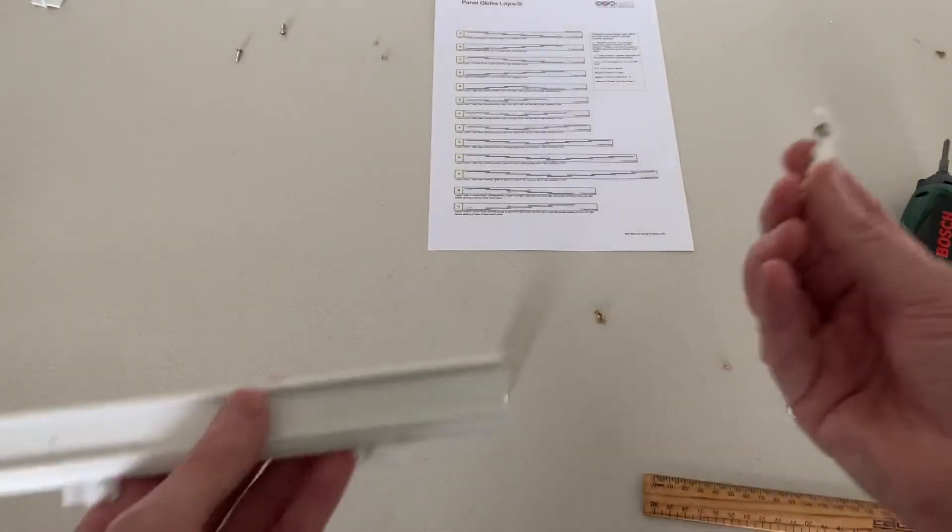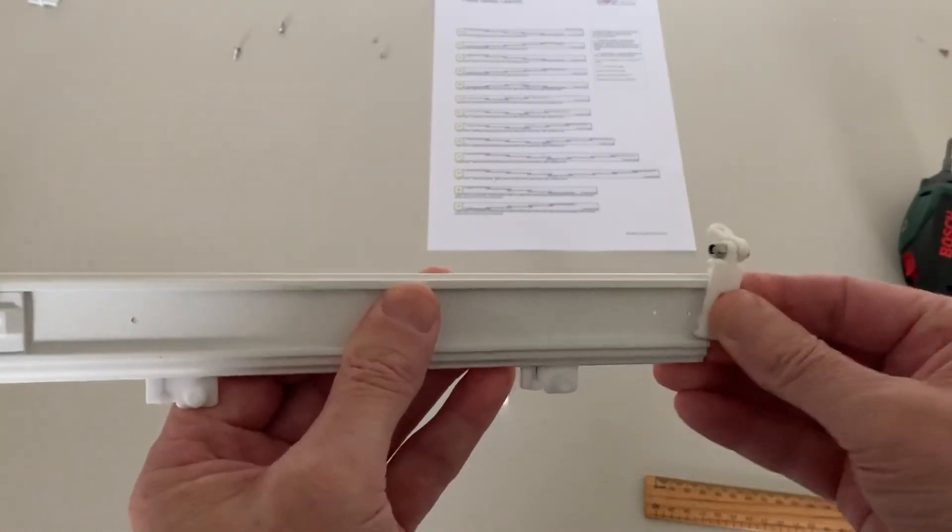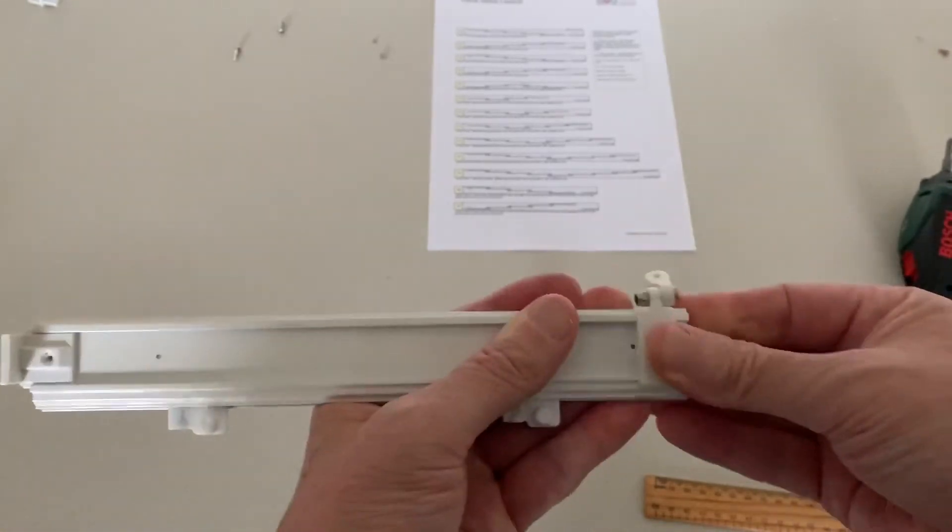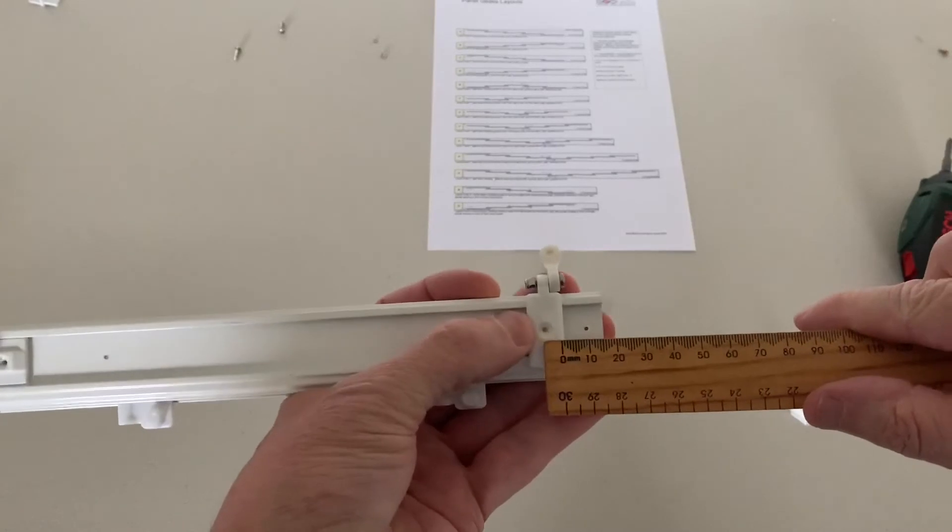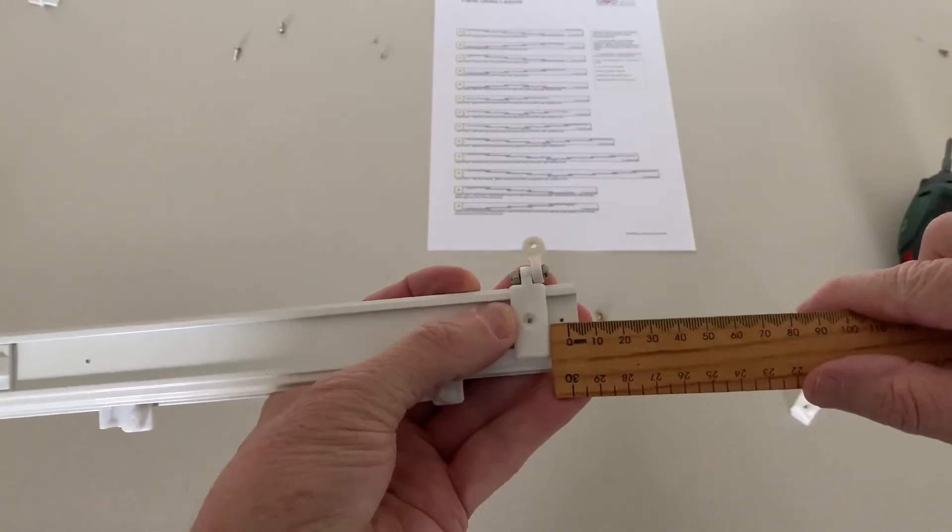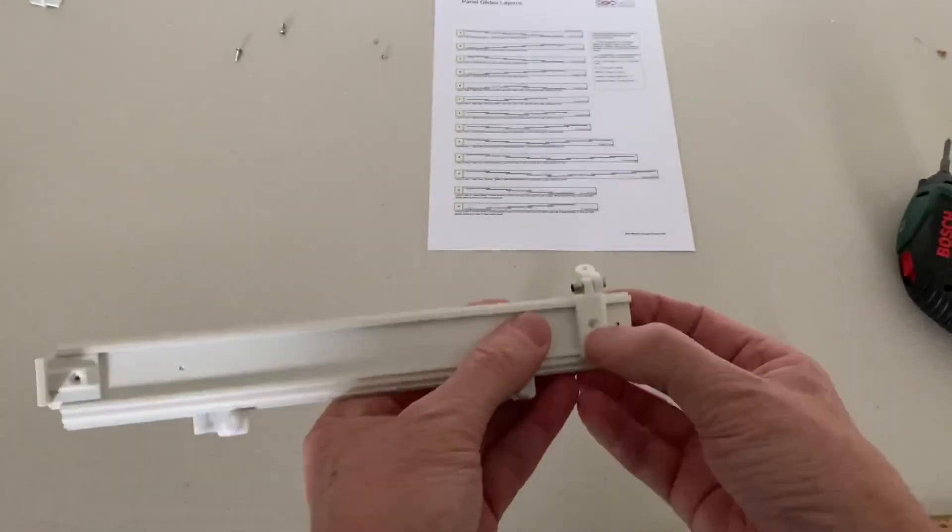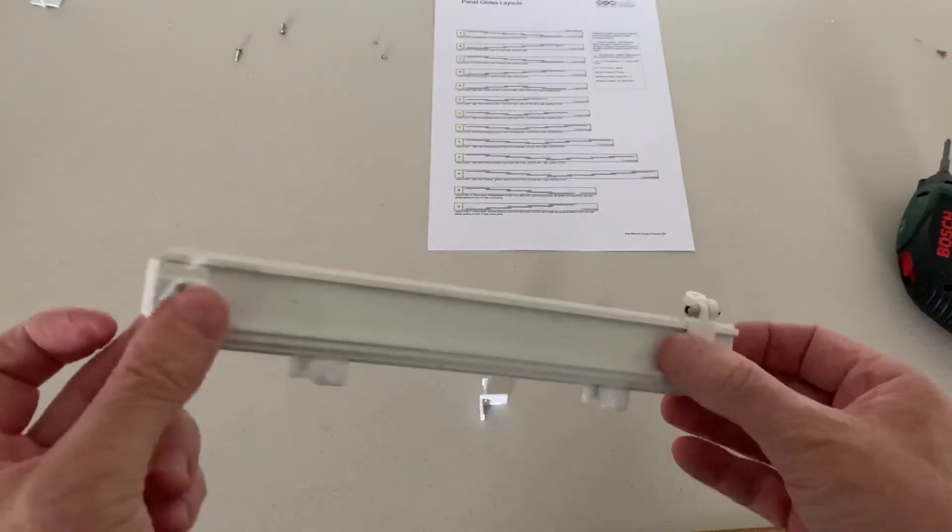If you're putting the one control on again, it just slides on the extrusion like so. And that's about 15 mil over from the end, roughly about 15 mil. Also a screw goes in there. So that's the different ways you set up a carrier.